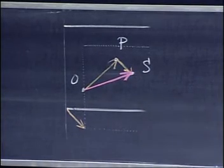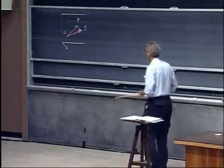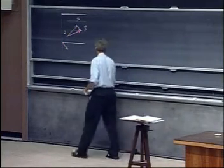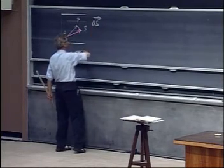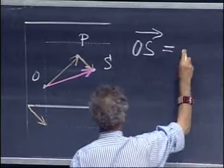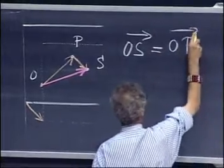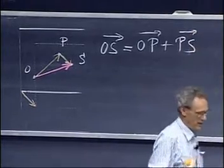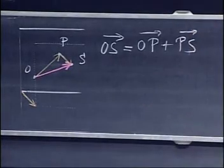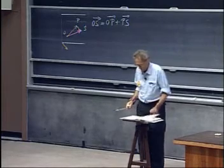And this holds the secret behind the adding of vectors. We say here that the vector OS, we put an arrow over it, is the vector OP with an arrow over it plus PS. This defines how we add vectors.